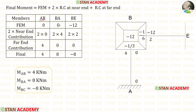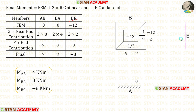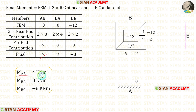For EA, the near end contribution is 4, and for AB the far end contribution is 0. After calculating all the final moments: M AB is equal to 4 kilonewton meter, M BA is equal to 8 kilonewton meter, and the moment in BE can be taken as M BC which is equal to minus 8 kilonewton meter.